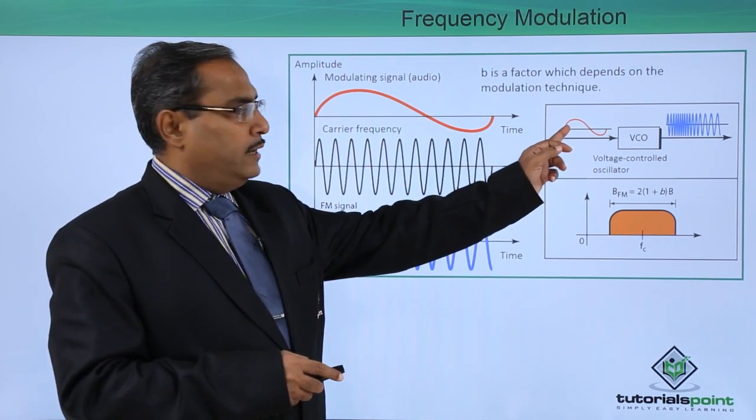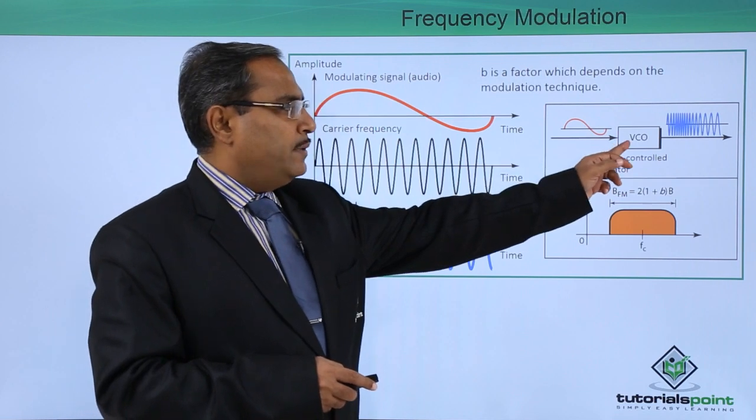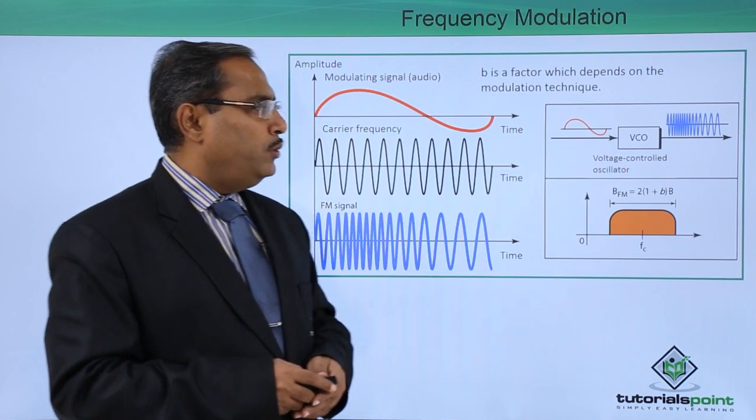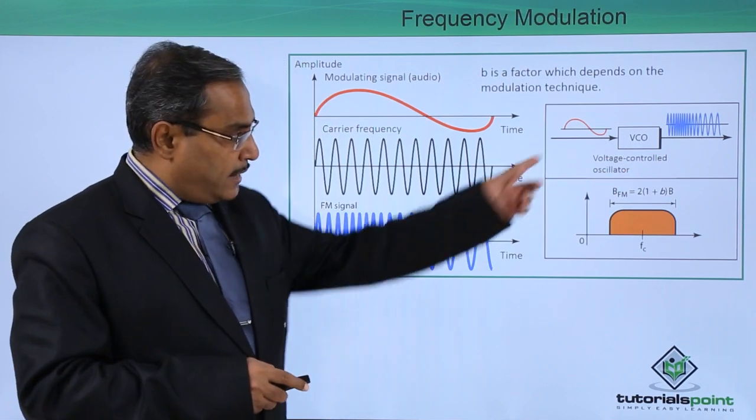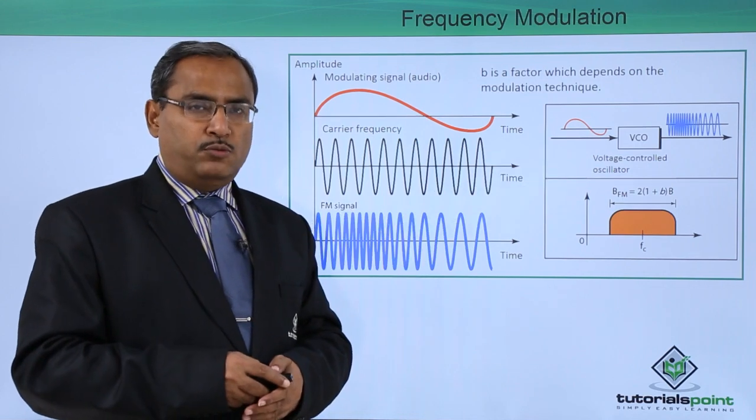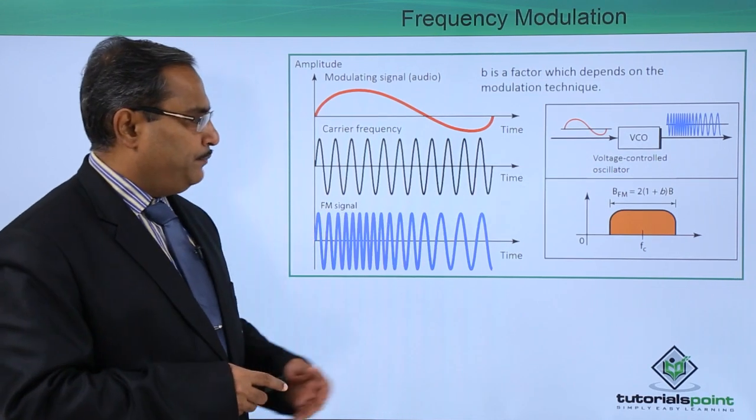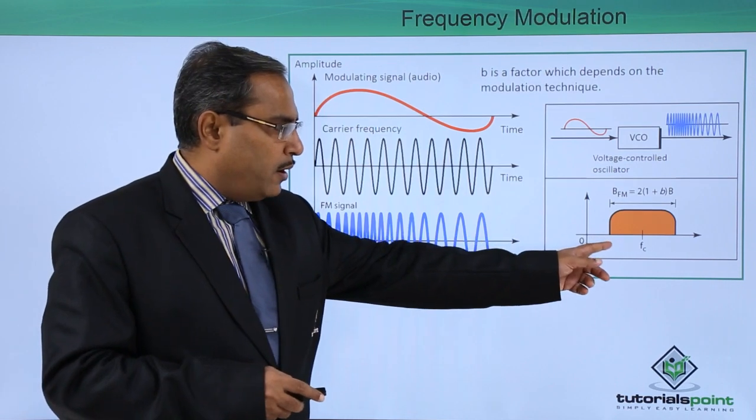This is our modulating data and this is our VCO. VCO stands for voltage controlled oscillator and the outcome will be obtained, that is the modulated signal. And it can be expressed in this form.